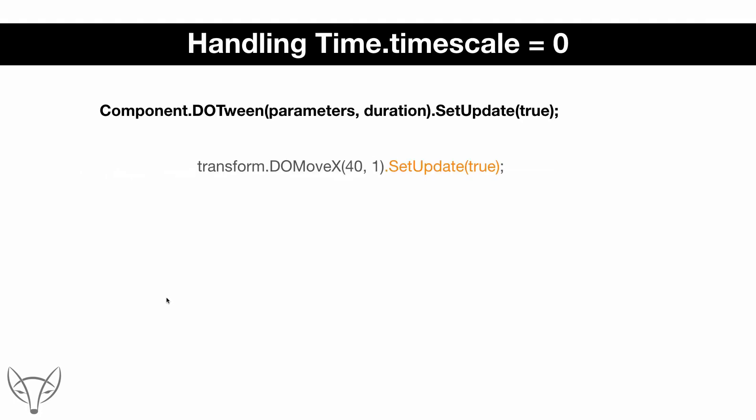There is an important issue having to do with timescale. When the game is over, programmers will often set timescale to zero, but that will prevent any DoTween animations from working unless you override it. You can override it by adding the specifier SetUpdate to true. Without it, the animation will not work when timescale is zero — but with SetUpdate true, it will not care about the timescale.